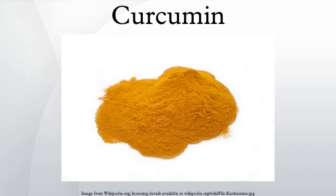Both mechanisms use cinnamic acid as their starting point, which is derived from the amino acid phenylalanine. This is noteworthy because plant biosyntheses employing cinnamic acid as a starting point are rare compared to the more common use of p-coumaric acid. Only a few identified compounds, such as anagorthan and penicillin, use cinnamic acid as their start molecule.